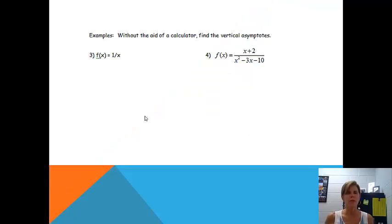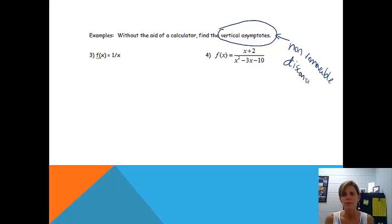Alright, examples are without the aid of your calculator, find the vertical asymptotes. You'll notice these examples are just like the examples for finding vertical asymptotes with your calculator. A vertical asymptote we will be able to find at non-removable discontinuities. So that's what we are going to be looking for, our non-removable discontinuities.